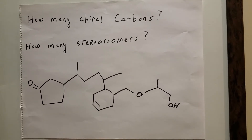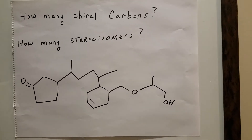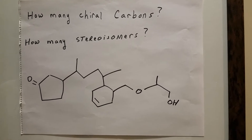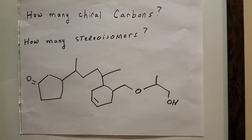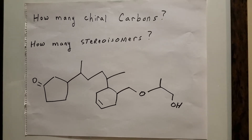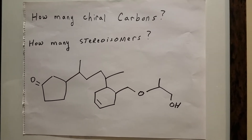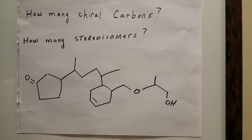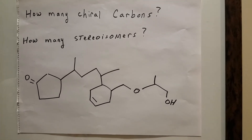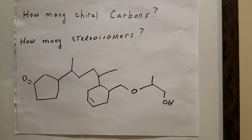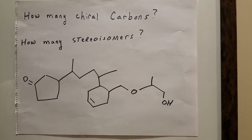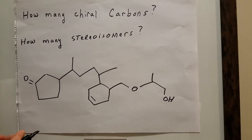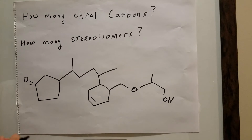The first thing I want to do is look at how many chiral carbons there are. In a problem like this, which would be considered a reasonably difficult problem, chiral carbons means there are four different groups attached to that carbon. But instead of thinking of four different groups, think of four different paths that you need to take.